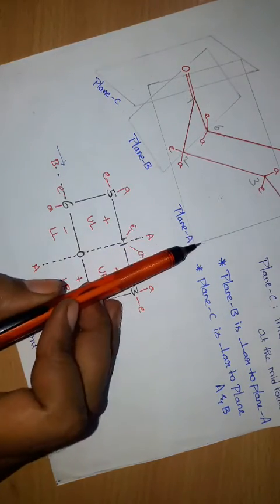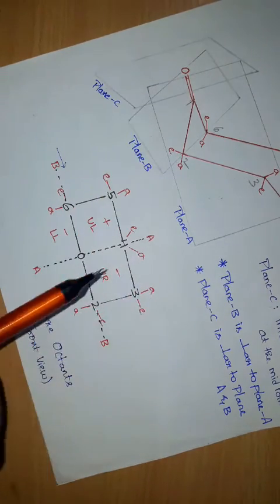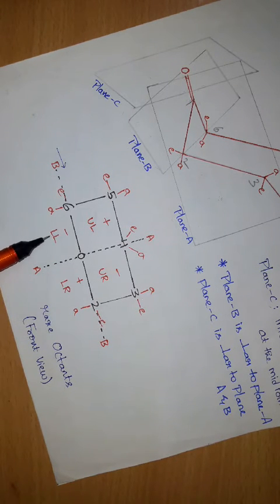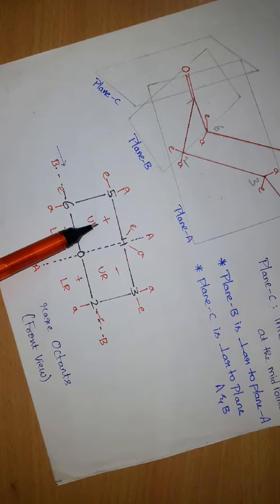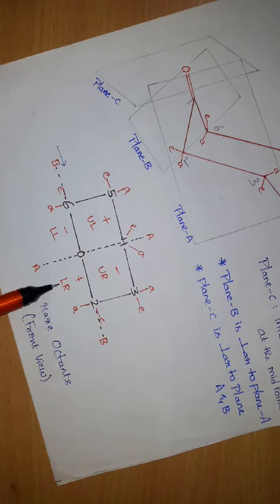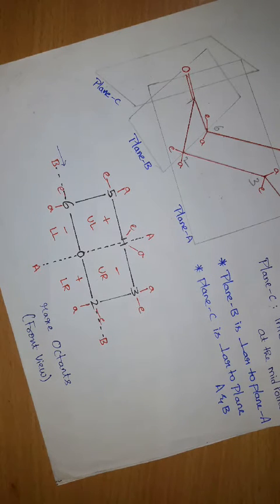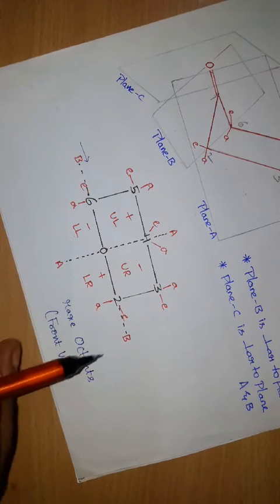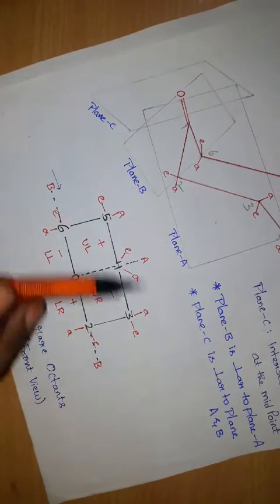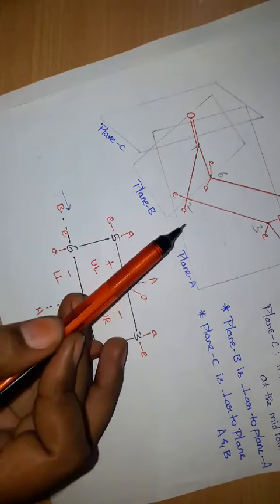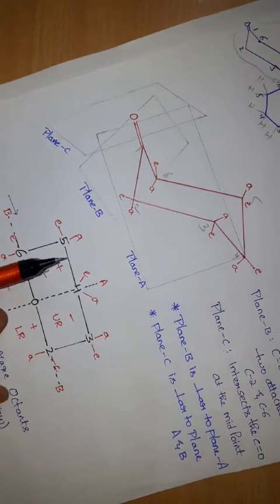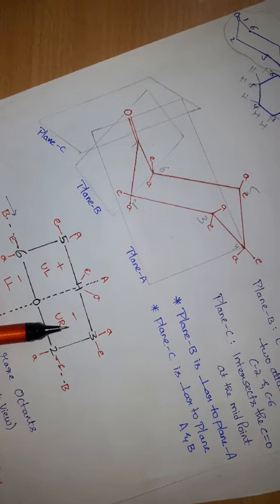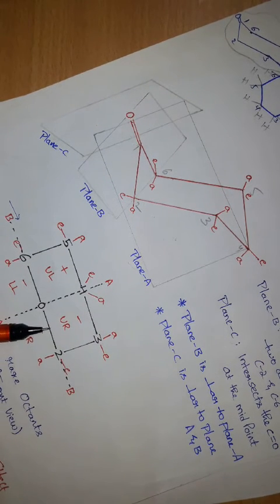Planes A and B divide the space around the carbonyl group into 4 quadrants designated as upper left, upper right, lower left, and lower right. Groups in these quadrants contribute to the sign of the Cotton effect dispersion curve: upper left is positive, upper right is negative, lower right is positive, and lower left is negative. These 4 quadrants constitute the set of the rear octants. On the left side of Plane C, there is another set of 4 quadrants which are mirror images of the rear octants, and substituents lying in the front quadrants contribute the opposite sign to the Cotton effect.